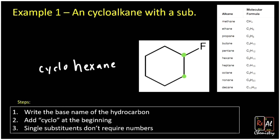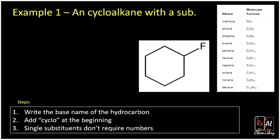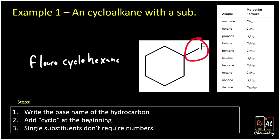Here's where something interesting comes up with ring structures. Let's say instead of the fluorine being here, we put it somewhere else — is that a different molecule? Well, no, it's not. All I've really done is rotate it a little bit. If you rotate that molecule, it can put the fluorine at any one of the corners. So it doesn't actually matter where you put the fluorine; you're making the same exact molecule. That means we don't need a number. We have cyclohexane and we just tack 'fluoro' in front of it — the full name is just fluorocyclohexane. No number needed, because no matter where I put that single substituent, it's going to have the same exact structure. This is only true for single substituents; if we have multiple substituents, then we do in fact need to number them.